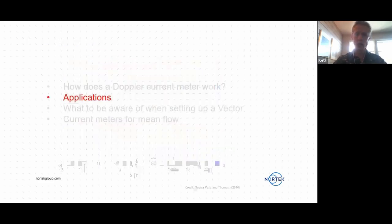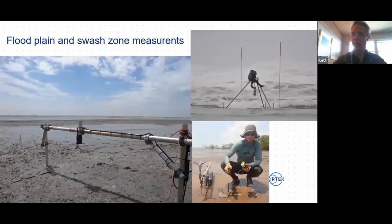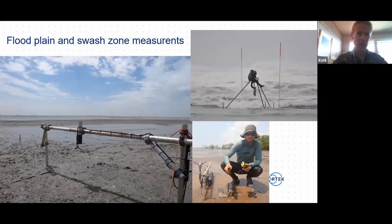Now, if we go into looking at more at the applications that the vector is used for. Here is an example of measurements done in floodplains and in swash zones. Typical for these areas is that they are dry during low tide, while when the tide comes in, they are submerged. And scientists very often want to know what's going on close to the seabed in situations where the tide comes in. And that is something the vector is perfect for doing because we can position the measurement volume very close to the seabed and we can measure once the water level is maybe only 15 to 20 centimeters high.